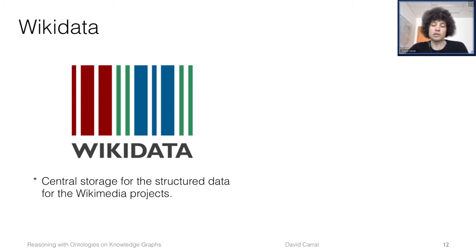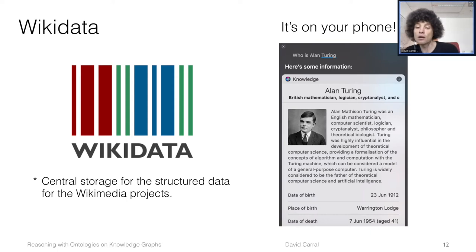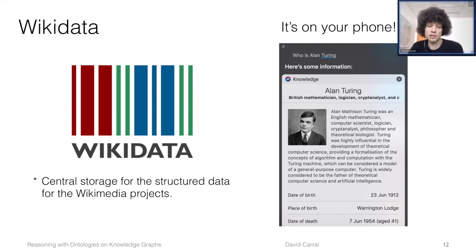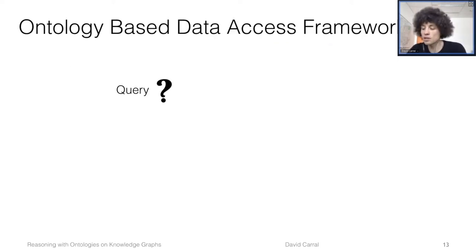Maybe you have never heard about Wikidata, but possibly it's something you've used because it's on your phone. For example, if you have an iPhone and you ask about Alan Turing, you're going to get some text that comes from Wikipedia but also some structured information that comes from Wikidata. For example, you would have that Alan Turing was born on this date, in this place, and here's his date of death. These are database entries in an online repository used to create this information box — you can query Wikidata and automatically know the date of birth of Alan Turing.